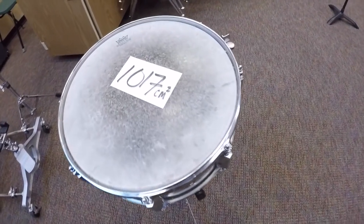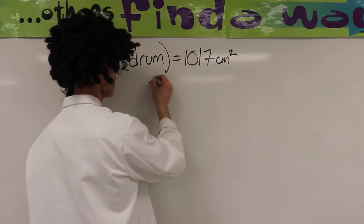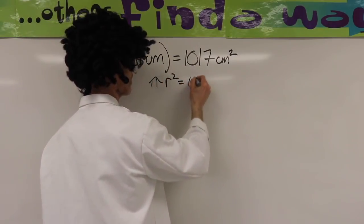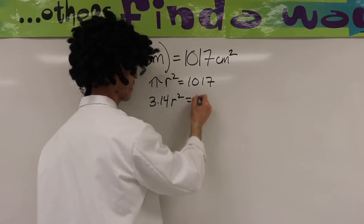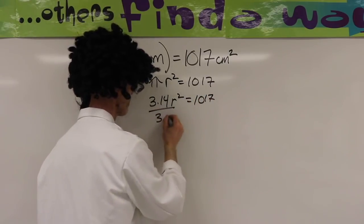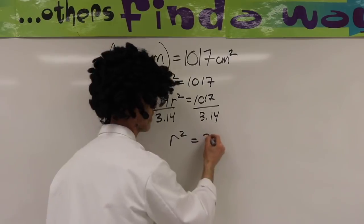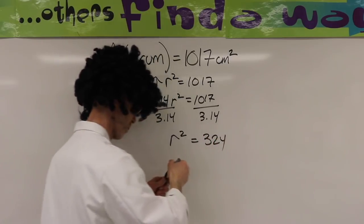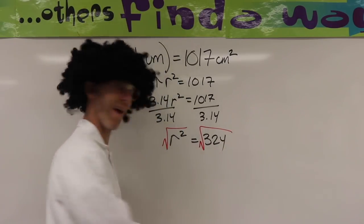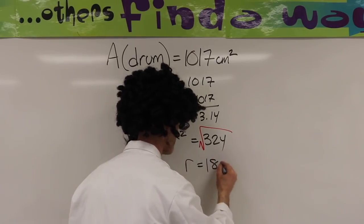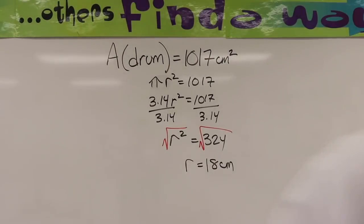Now let's see here — the area of the snare drum is 1,017 square centimeters. I know that the formula for the area of a circle is pi r squared. That means I should divide both sides of the equation by 3.14, which is the approximate value for pi. That leaves me with r squared on one side and about 324 on the other. Taking the square root of both sides gives r on one side, and the square root of 324, which is 18, on the other. That's how you get the radius when you know the area.